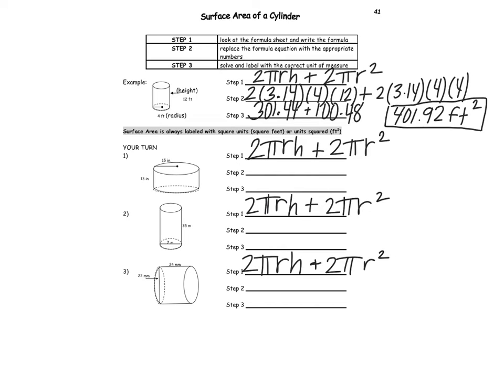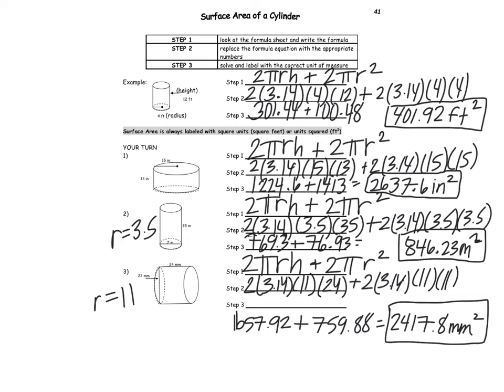So go ahead and try numbers 1, 2, and 3. But again, be careful on numbers 2 and 3 because they have a diameter, so make sure that you half those. All right, so go ahead and check yourself. If you missed something, correct it. If not, go ahead and move on to the next page.